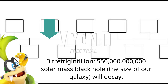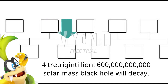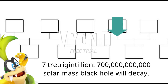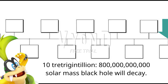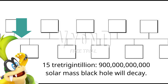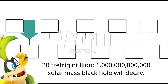3 Tretrigentillion: a 550 billion solar mass black hole will decay. 4 Tretrigentillion: a 600 billion solar mass black hole will decay. 5 Tretrigentillion: a 650 billion solar mass black hole will decay. 7 Tretrigentillion: 700 billion. 8 Tretrigentillion: 750 billion. 10 Tretrigentillion: 800 billion. 12 Tretrigentillion: 850 billion. 15 Tretrigentillion: 900 billion. 18 Tretrigentillion: 950 billion. 20 Tretrigentillion: 1 trillion solar mass black hole will decay. 70 Tretrigentillion: 1 trillion 500 billion solar mass black hole will decay.